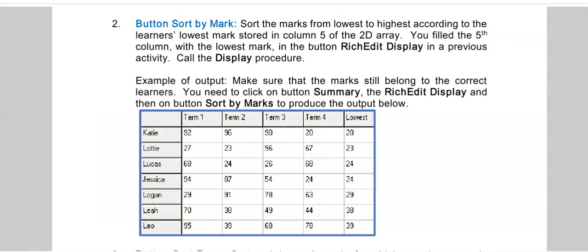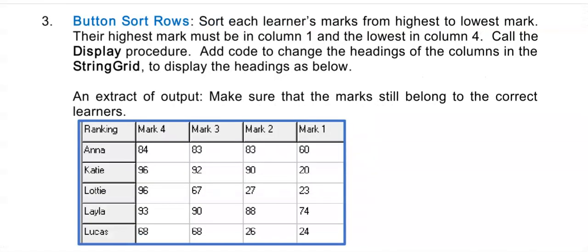Here you are required to sort according to the lowest mark. So this column here is your fifth column in your 2D array. And this is the last button for sorting.